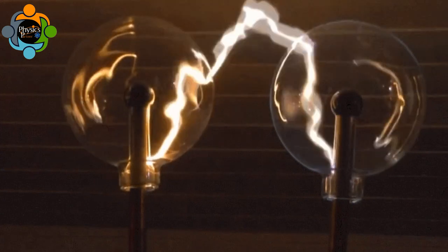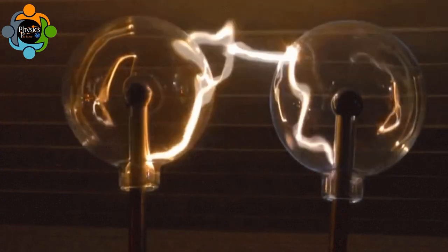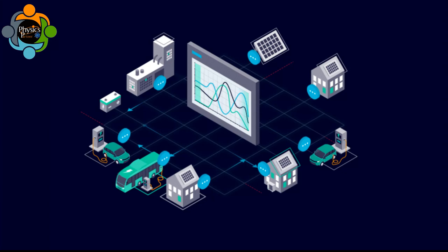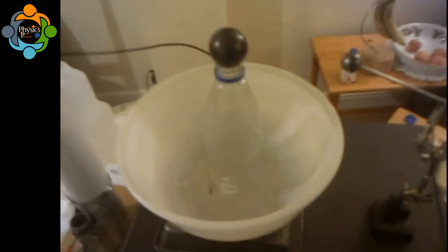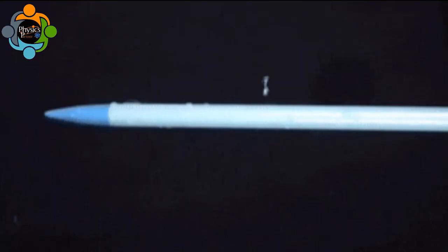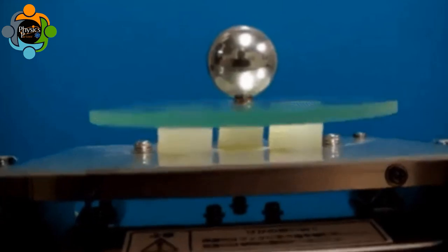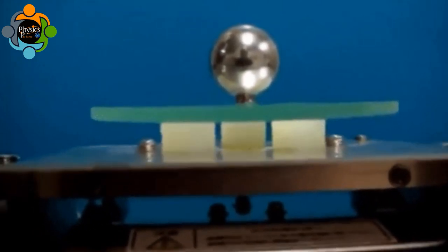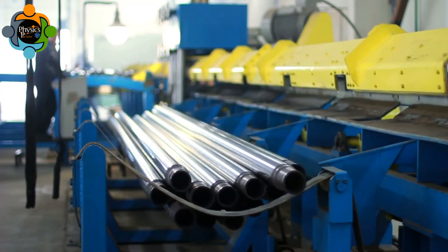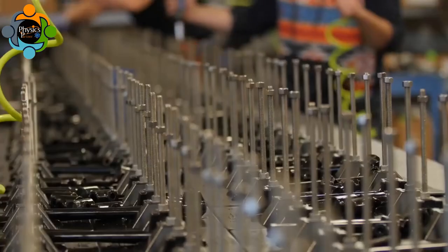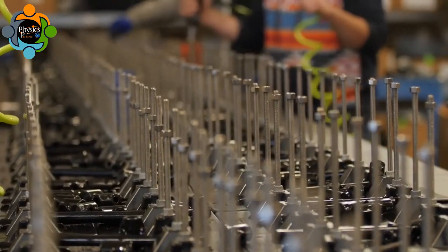Let's talk about the applications of this machine. The Wimshurst machine was used for various applications such as generating high voltage charges for scientific experiments and demonstrations, charging Leyden jars, and powering early electrostatics experiments. Additionally, it was used as a teaching tool for the principles of electrostatics in classrooms and laboratories. The machine was an important invention in the field of electrostatics and helped advance our understanding of electricity and magnetism.